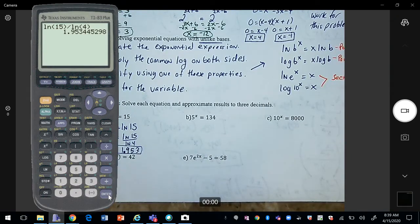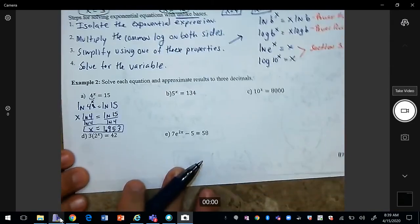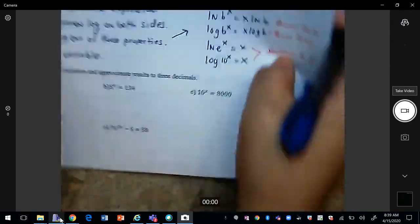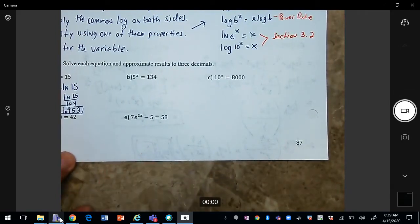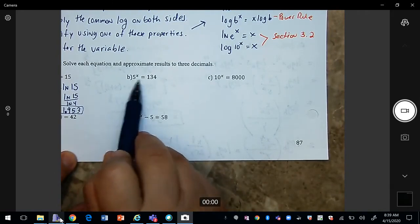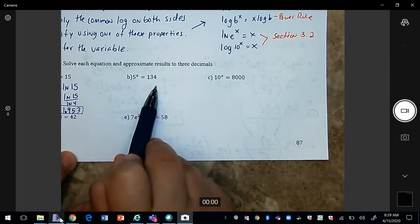So let's go on to the next one, number 5. So first you can check, can you make 134 have base 5? And in this case we cannot.